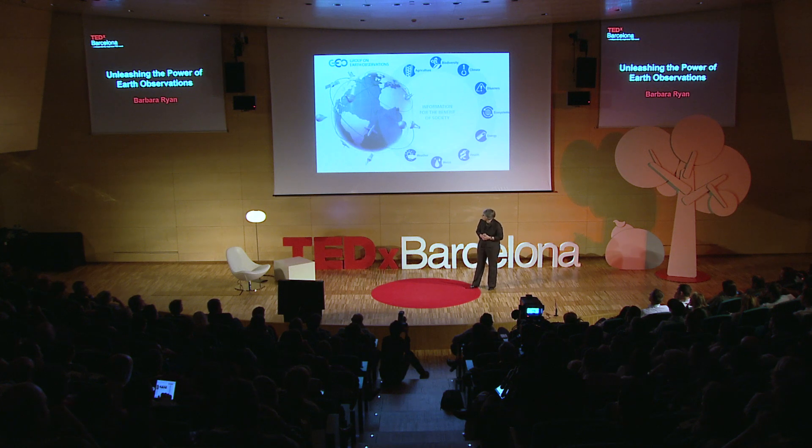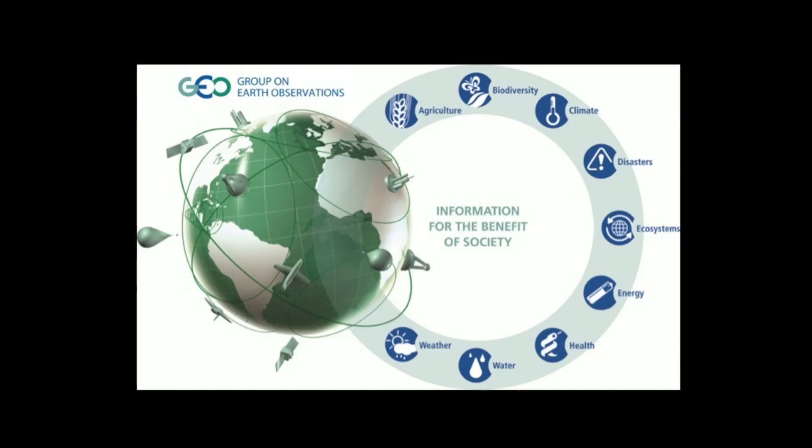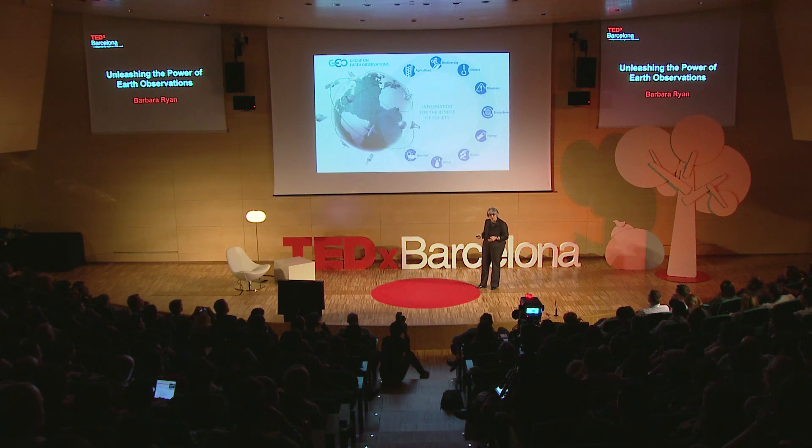The organization I now work for is the Group on Earth Observations. What we are largely trying to do is bring all the assets from space-based, airborne, terrestrial, or marine-based sensors together to address society's problems. Many observations are collected domain by domain — measurements used just for weather, just for climate, or just for agriculture. How can we bring all of these observations together and apply them to each of society's major environmental problems?